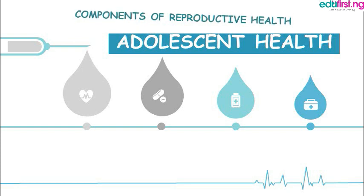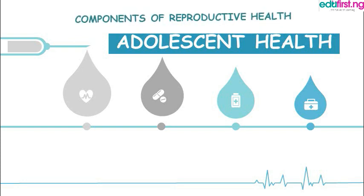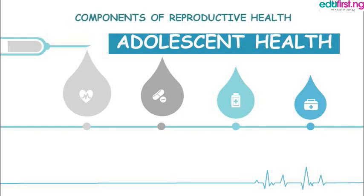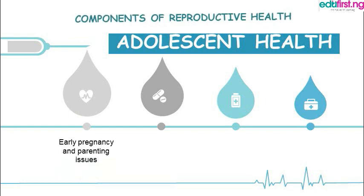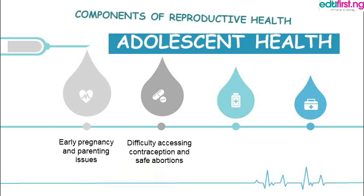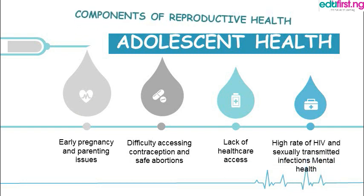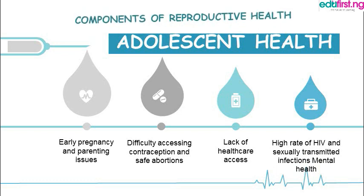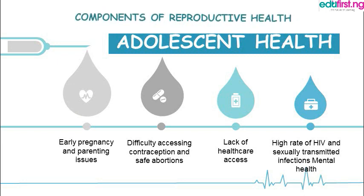Here are the components of reproductive health. First, we have adolescent health. Adolescent health has to do with early pregnancy and parenting issues, difficulty accessing contraception and safe abortions, lack of health care, a high rate of HIV and sexually transmitted infections, and also mental health. These are what covers adolescent health. For you to have good health as an adolescent, your emphasis has to cover these areas of adolescent health.